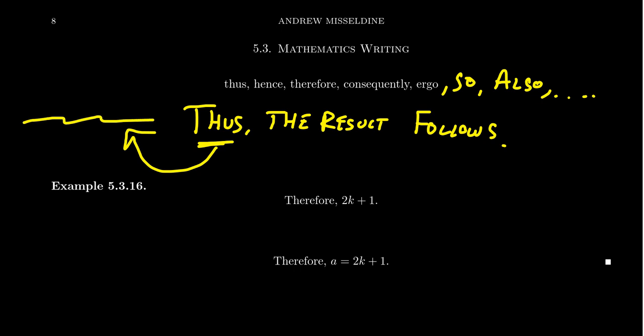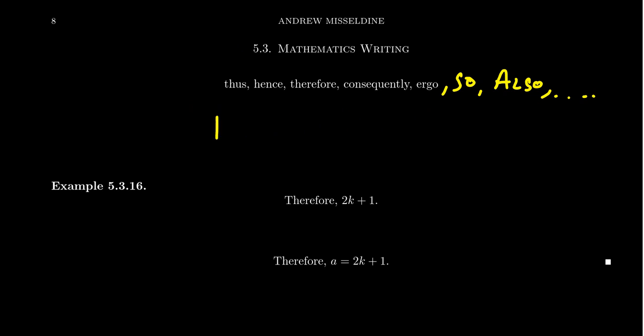Previously there was this implication that you had some statement over here that because it's true, then this one's true as well. So these words thus, hence, therefore, they suggest some type of implication that p implies q. So we could say something like thus q because p happened earlier. p holds, thus q holds.